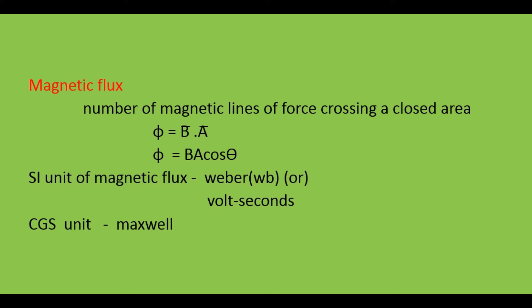Generally, magnetic flux is the product of the average magnetic field times the perpendicular area that it penetrates. That is, magnetic flux is the product of the magnetic field and its area. The magnetic flux is represented by the letter phi. So phi equals B dot A, and since it is a dot product we can write phi equals BA cos theta. Phi is the magnetic flux.